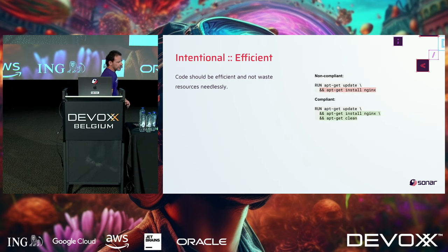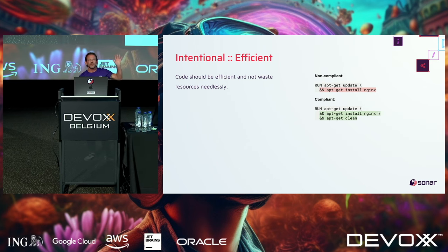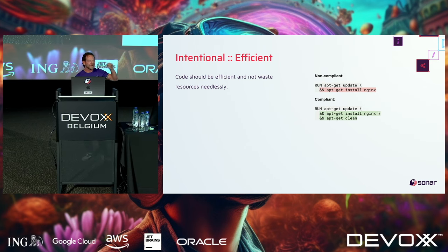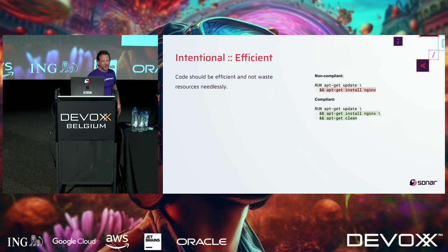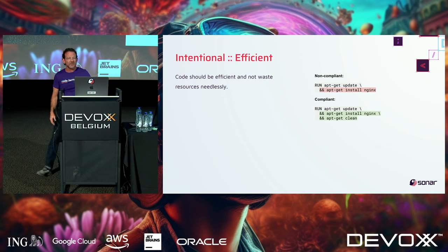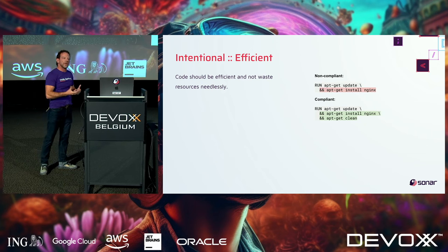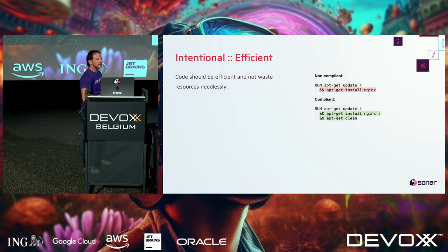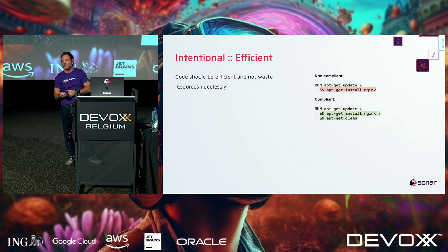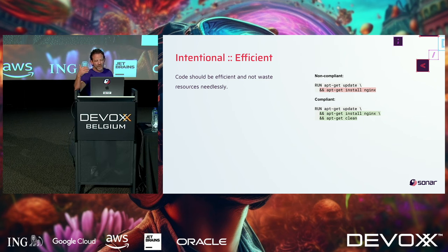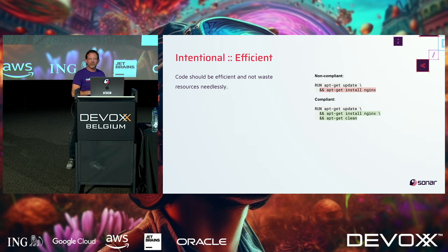Part of being intentional is also being efficient. Here's a Docker example — after you do an apt-get install nginx, apt-get leaves stuff around. The idea with your images is you want them as small as possible so you can pass them around and they start up faster. The compliant code includes apt-get clean, so you're being efficient and making sure your code produces small, fast results.